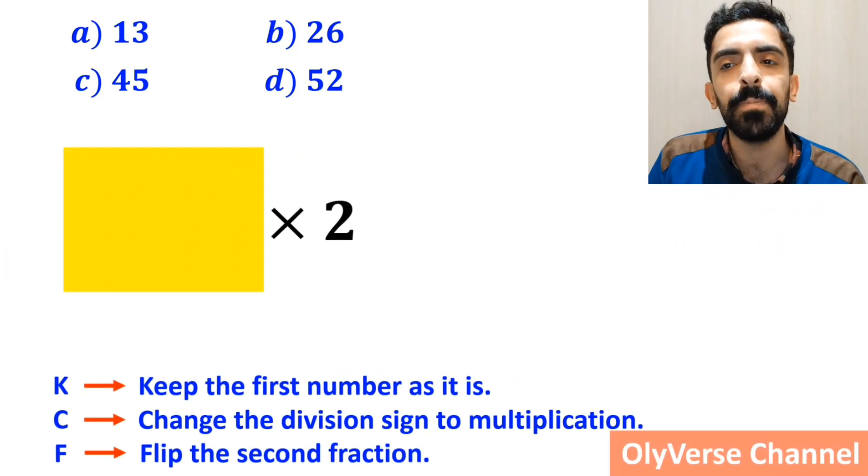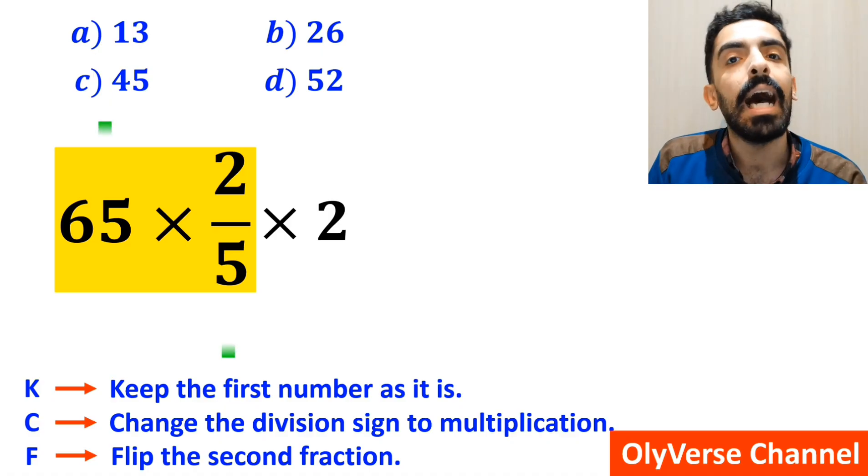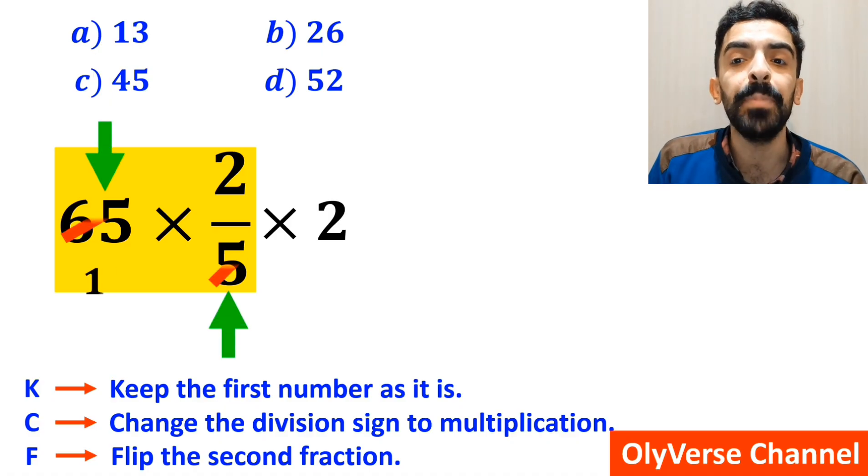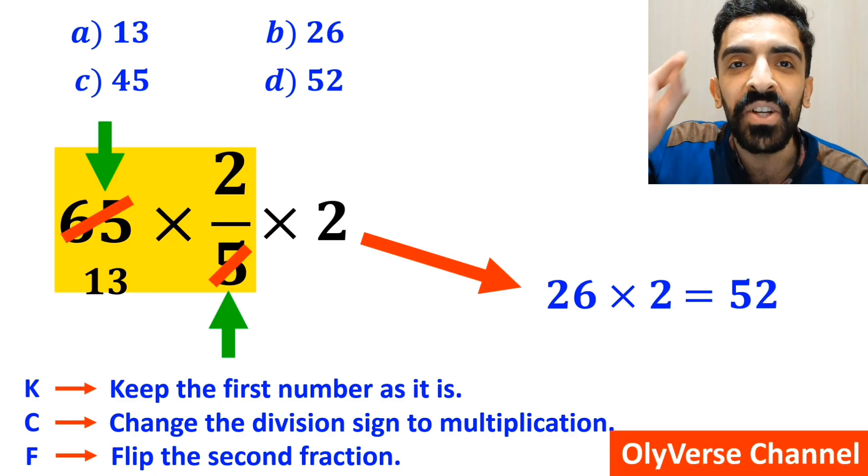So we'll remove the highlighted part and replace it with 65 multiplied by 2 over 5. The number 65 simplifies with the 5 in the denominator. And instead of this expression, we can write 26 multiplied by 2, which finally gives us the answer 52.